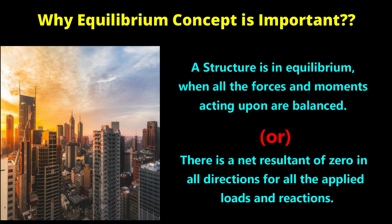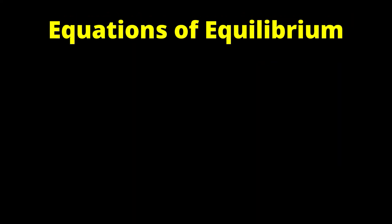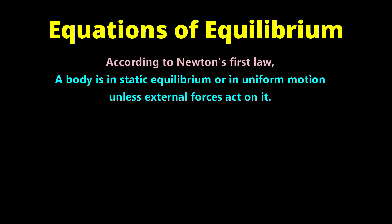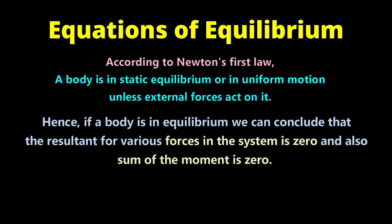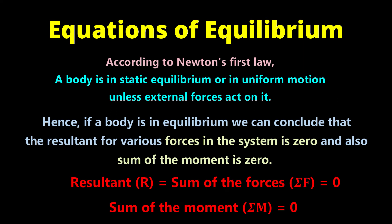Next, equations of equilibrium. According to Newton's first law, a body is in static equilibrium or in uniform motion unless external force acting on it. Hence, if a body is in equilibrium we can conclude that the resultant of various forces in the system is zero and also sum of the moments of the forces is also zero. It means the resultant force R which equals sum of the forces equals zero, and sum of the moment equals zero.